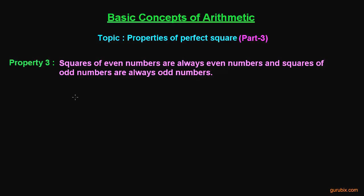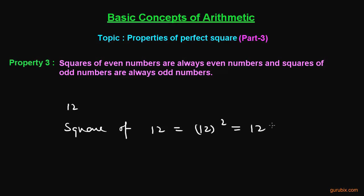This is very easy to understand. Suppose we have an even number, 12, and if we find the square of 12, then it will be 12 squared — this means 12 into 12, which equals 144.